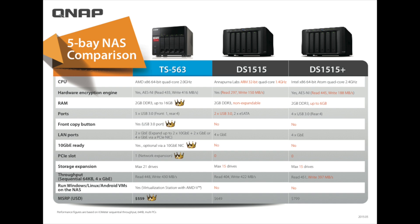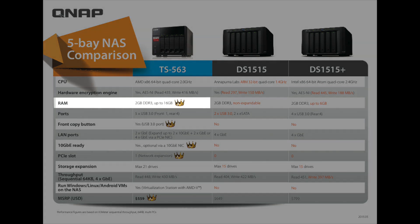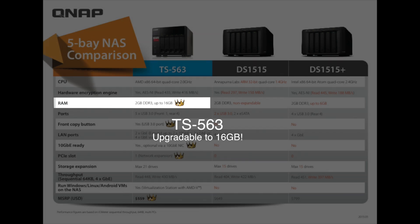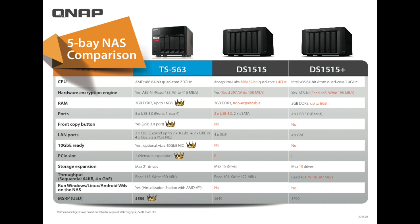Next, let's look at RAM — the memory in each of the units. The QNAP TS-563 comes with 2 gigs of RAM and that's upgradeable to 16 gigs. The DS-1515 comes with 2 gigs as well, but that's not upgradable. The DS-1515+ comes with 2 gigs and is upgradable to 6 gigs of RAM.